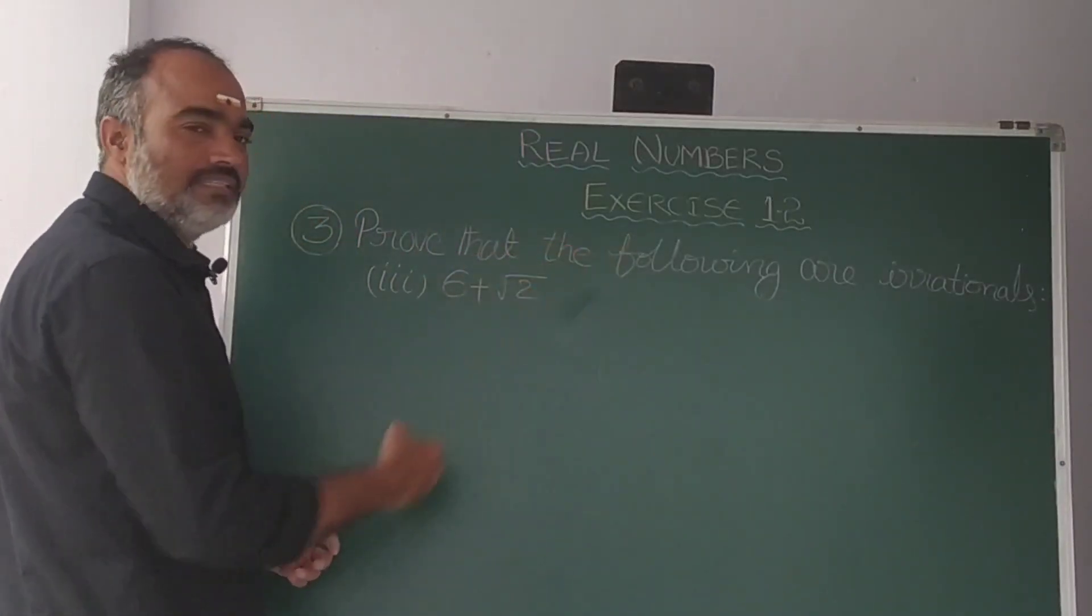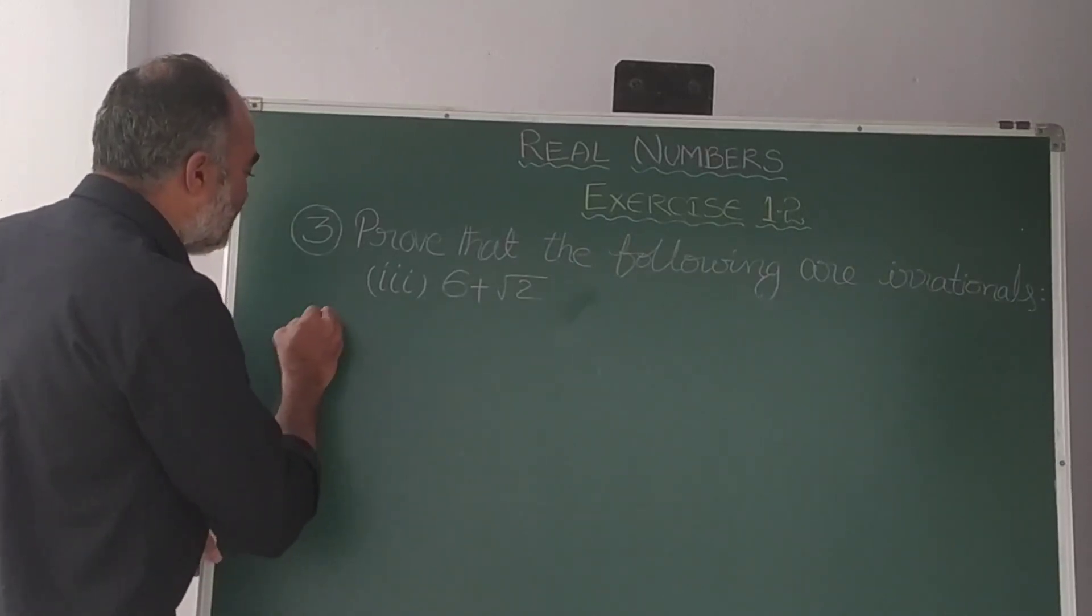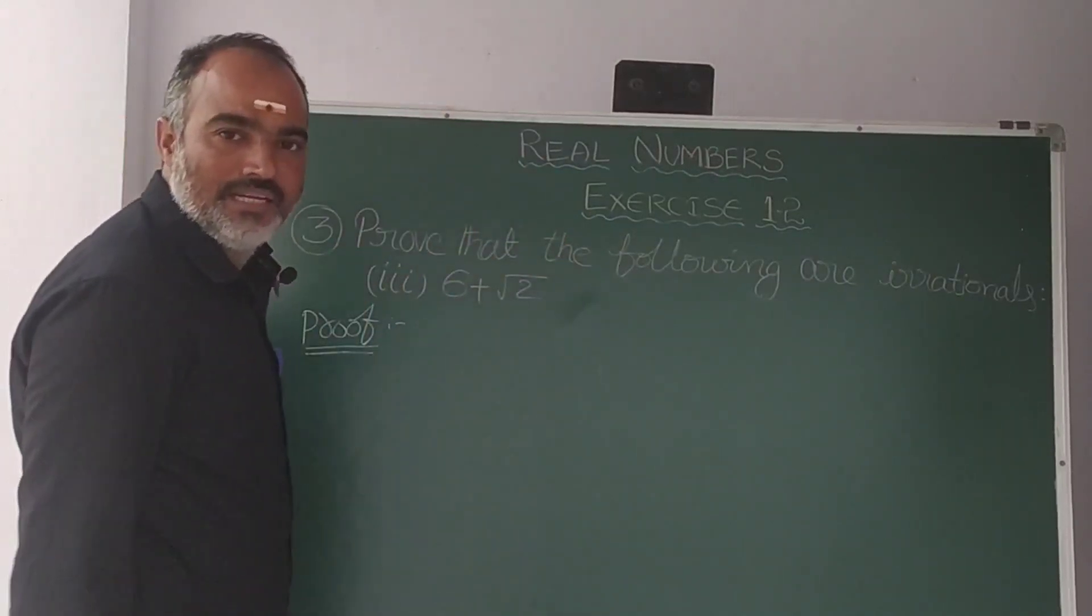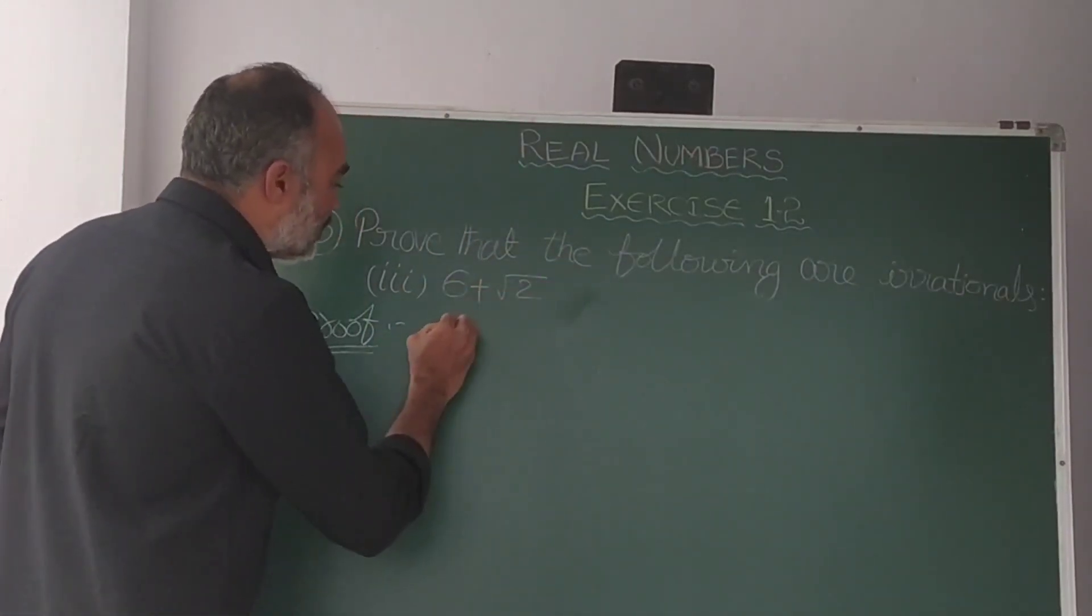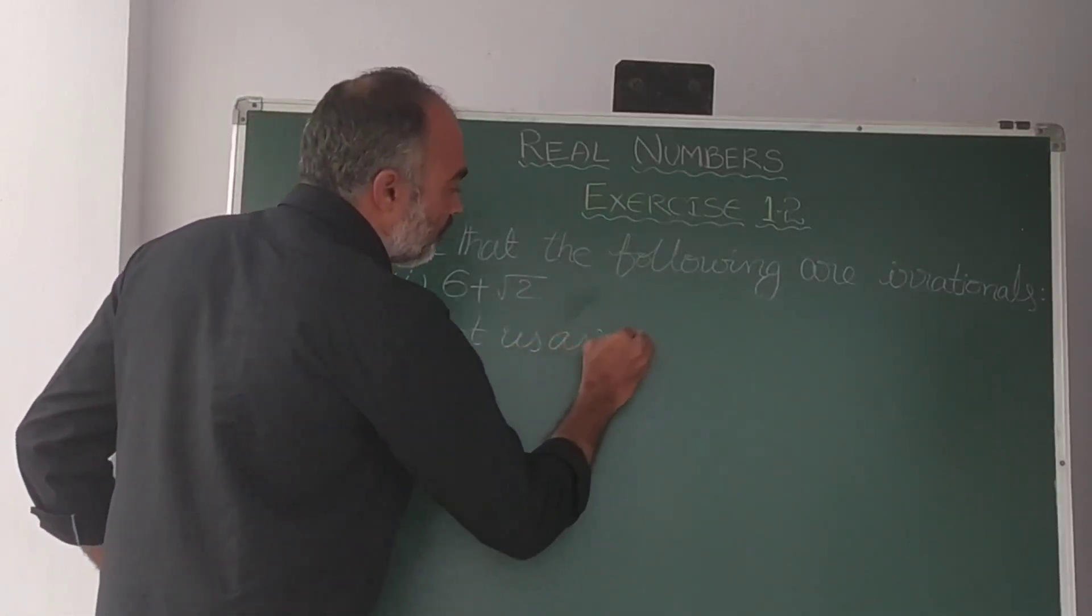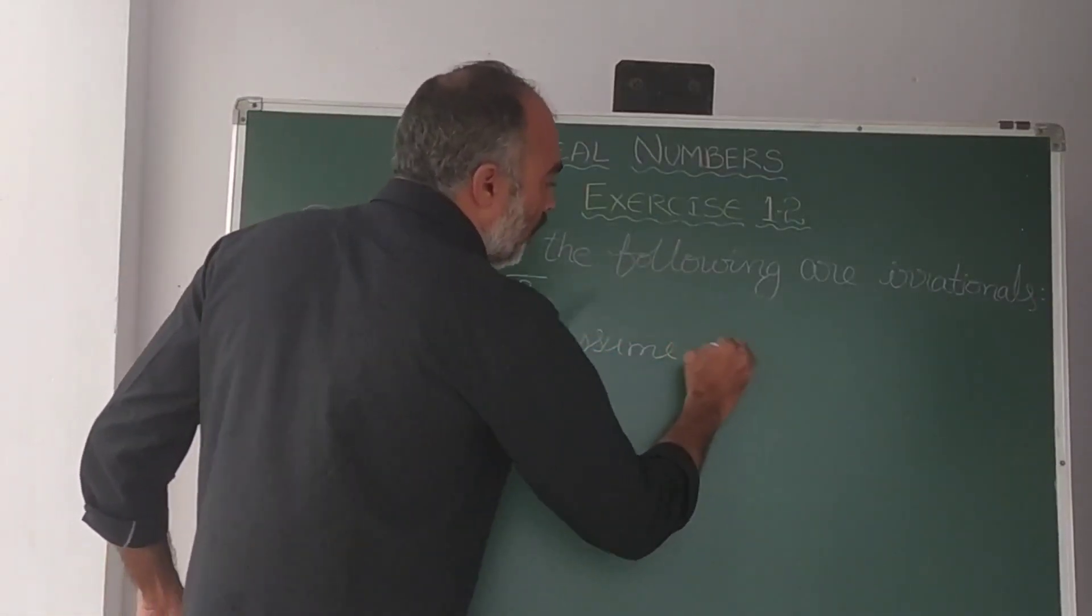Now I have to try to explain the first lesson. This lesson is easy. I know you are a proof of contradiction. The next lesson is 6 plus root 2. Let us assume, to the contrary,